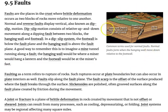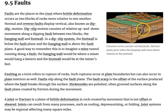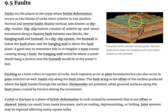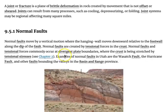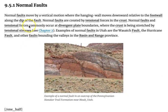We see this in the simple block diagram. The foot wall block is the block of rock below or on the lower side of the fault surface, with the hanging wall block being above the fault surface. We also see here a fault scarp. Normal faults move by vertical motion, where the hanging wall block moves downward relative to the foot wall along the dip of the fault.